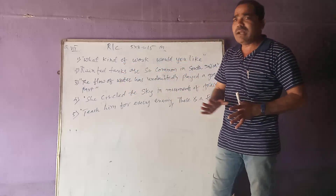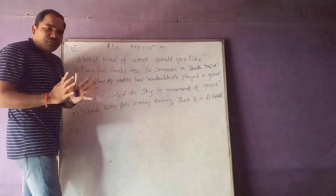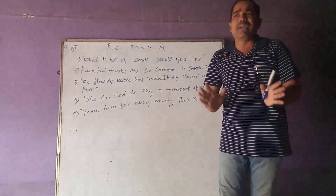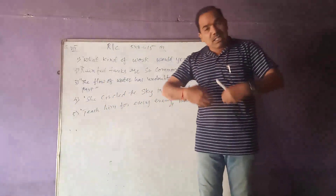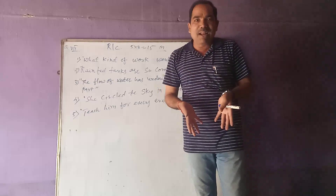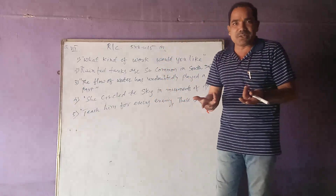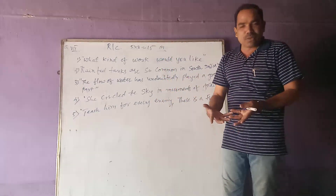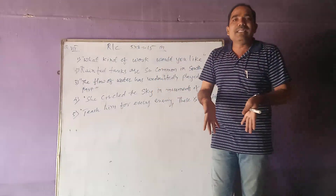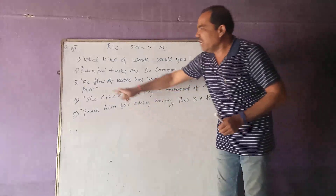The third one: 'The flow of water has undoubtedly played a great role or great part.' Remember, three references always come from the prose section and two from poetry. If you have gone through each lesson properly, you can solve this easily. Generally only the teacher reads and students listen, but you need to read the lessons yourself. You need to become serious if you want to score well — otherwise it is highly impossible.